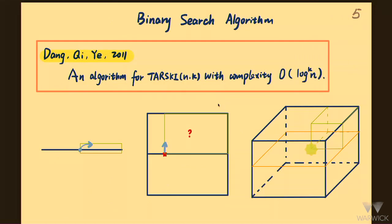In 2011, Dang, Qi, and Ye gave an algorithm with query complexity and time complexity of (log n)^k, where k is the dimension and n is the length of the grid. So for any constant dimension, we can have a polynomial time algorithm. This is already different from other famous fixed points — for example, Brouwer and Borsuk-Ulam, which are PPAD-complete and PPA-complete respectively, even when the dimension is two. But for any constant dimension we now have a polynomial time algorithm, and the algorithm is fairly simple.